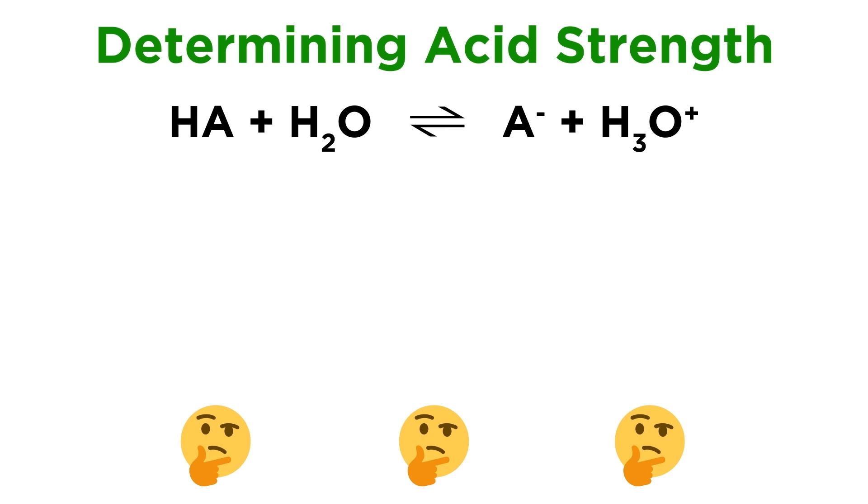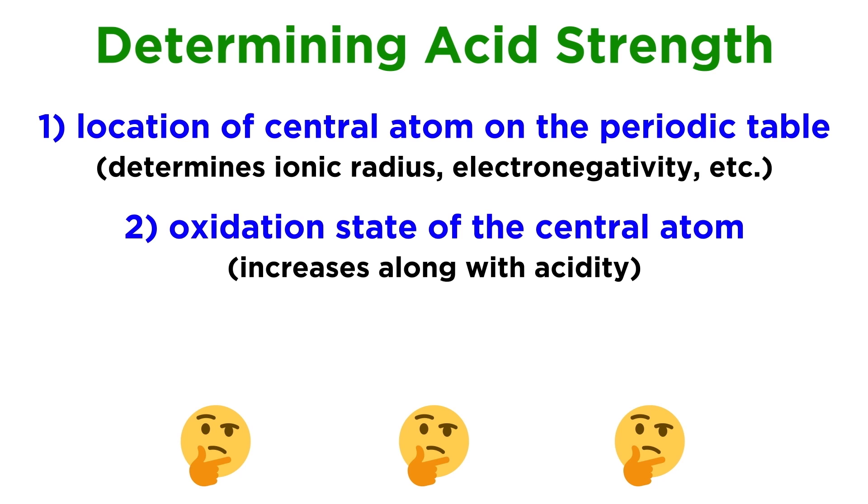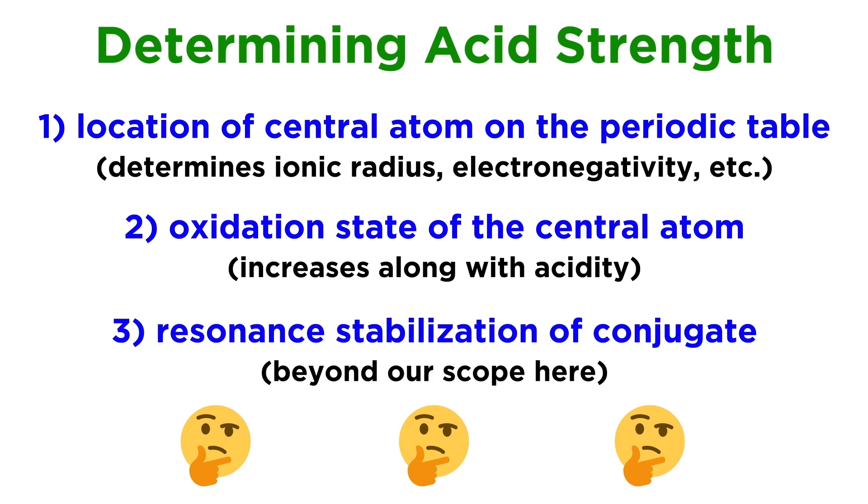So when we are looking at acids and bases, there are factors in terms of molecular structure that determine their strength. We must look at the location of the central atom on the periodic table because this will determine characteristics like ionic radius and electronegativity. We must consider the oxidation state of the central atom, and there are other factors like the extent of resonance stabilization that may apply, although that is a bit beyond our scope here.